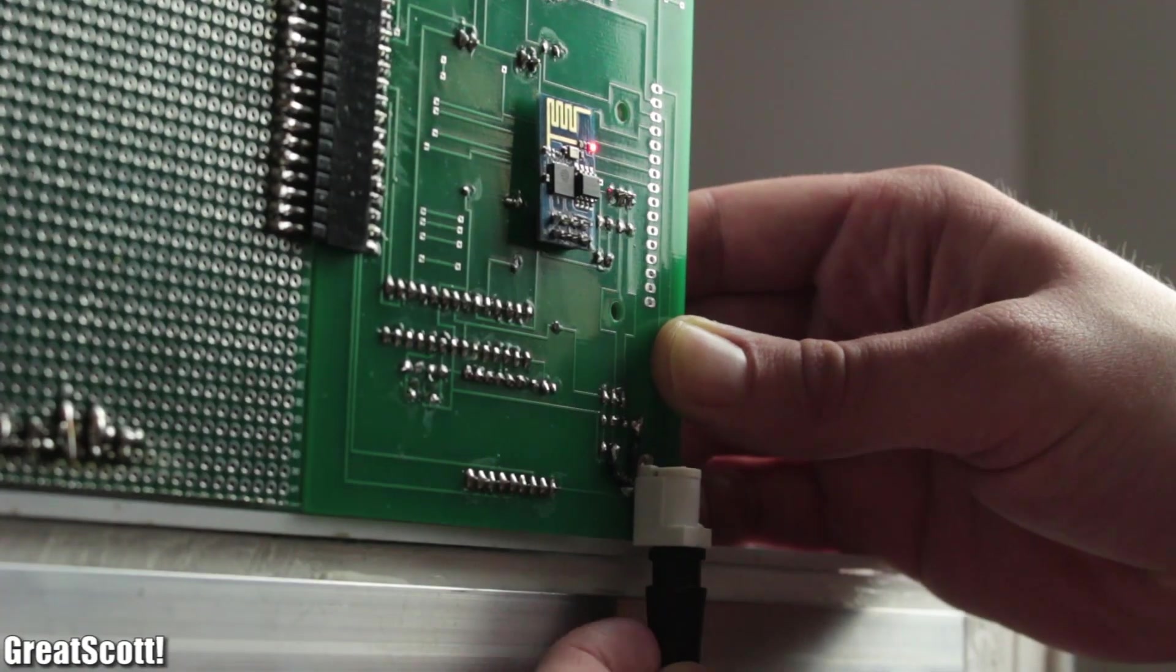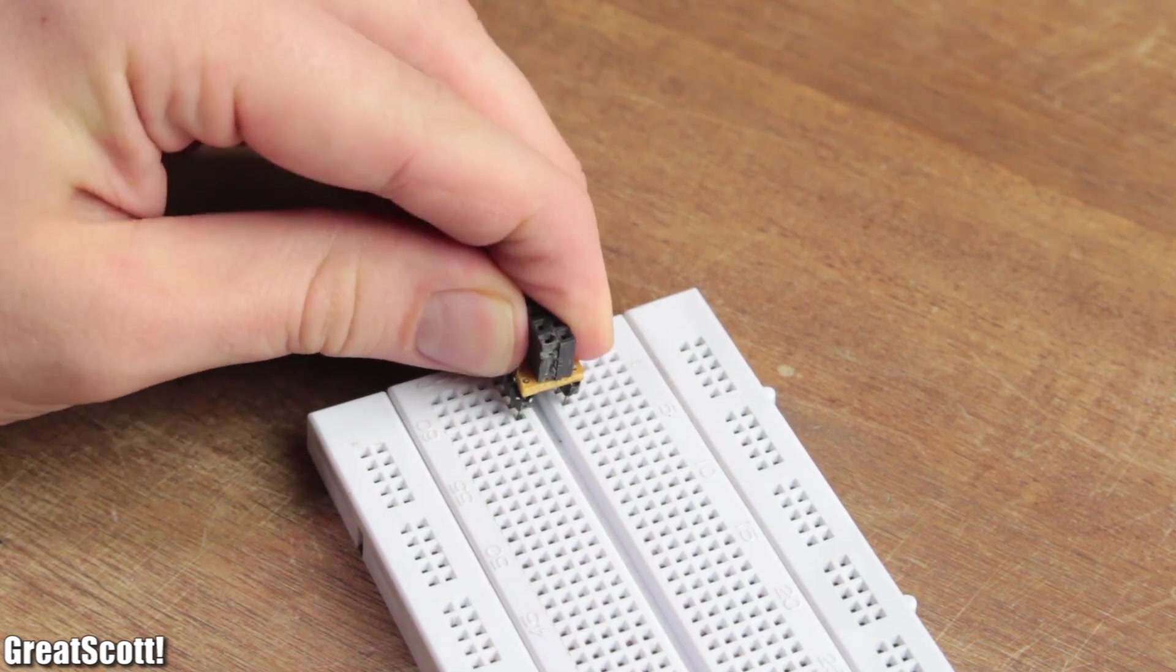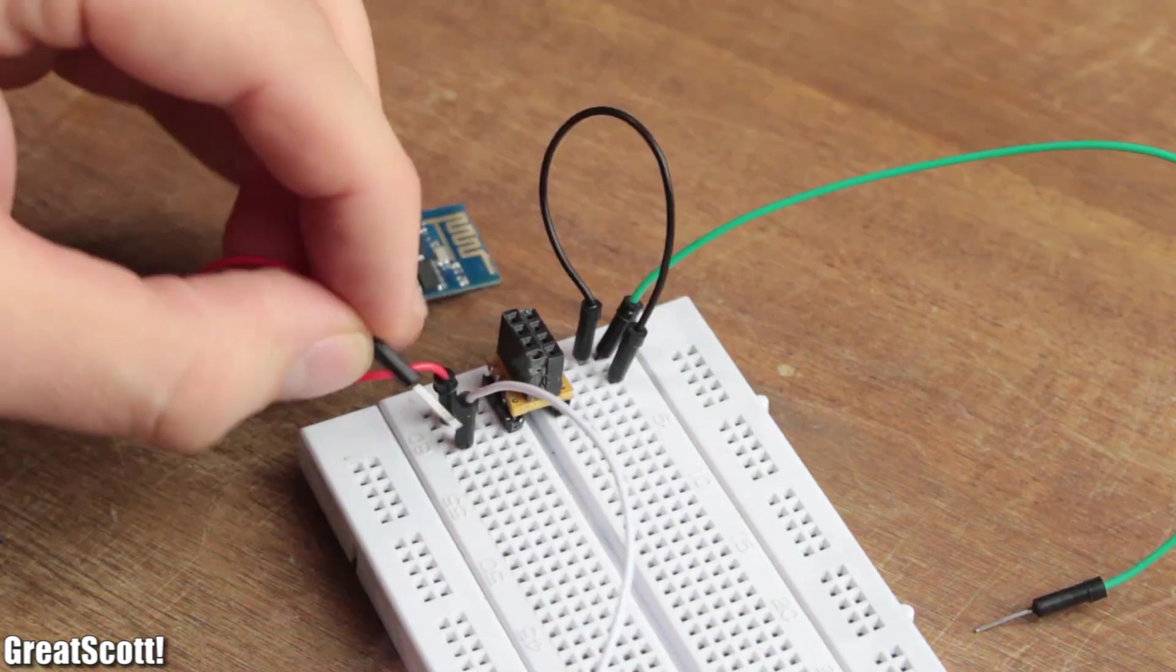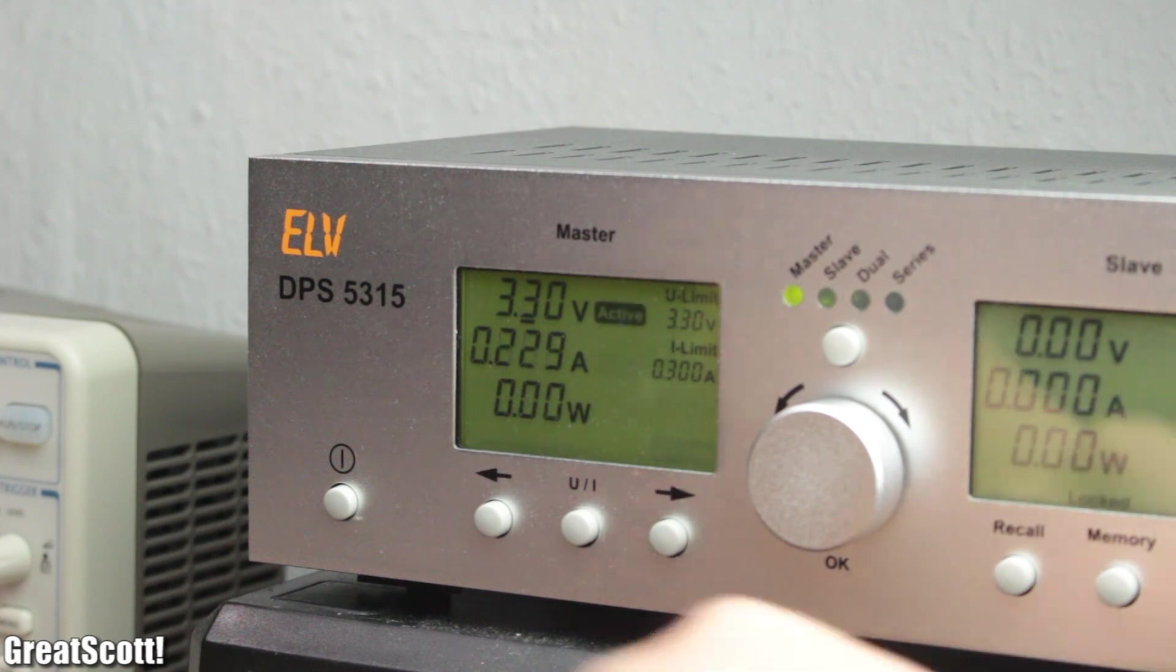Before bringing the module into its final position though, I firstly flashed the firmware 1.3 onto it. This means I had to connect GPIO0 to ground, chip power down to VCC and powered all with a 3.3V power source.